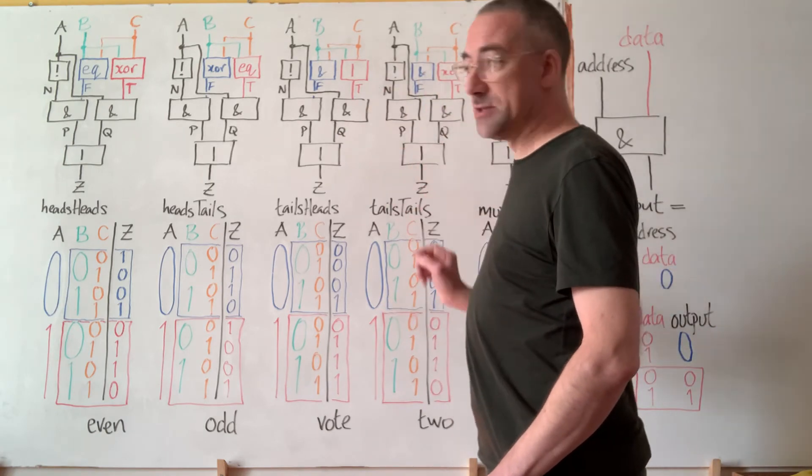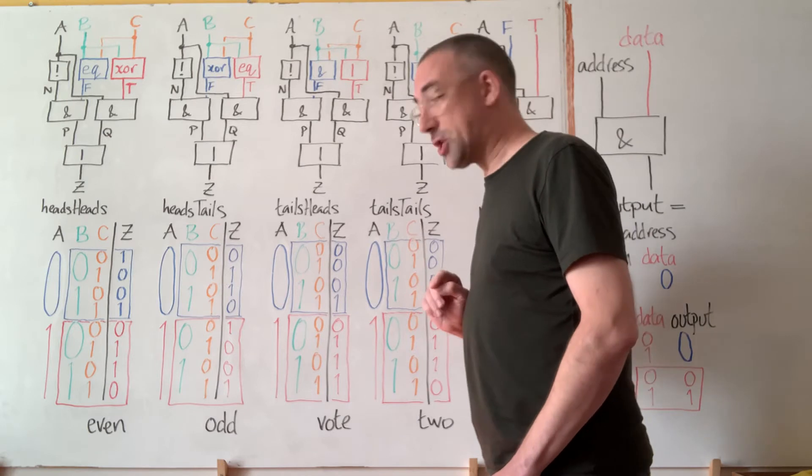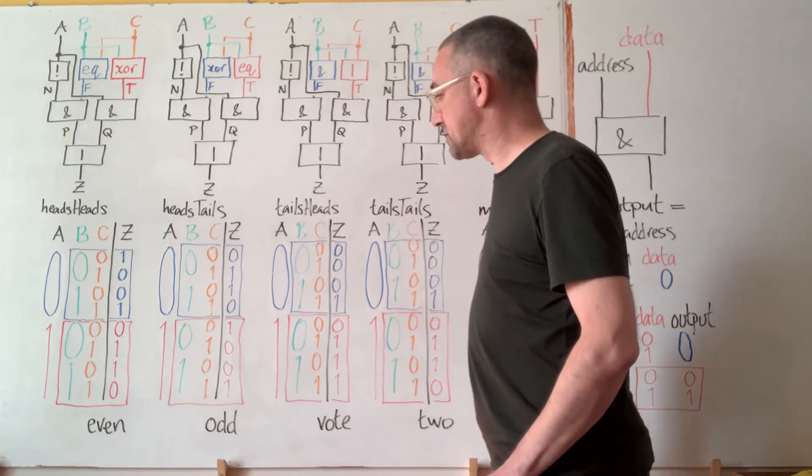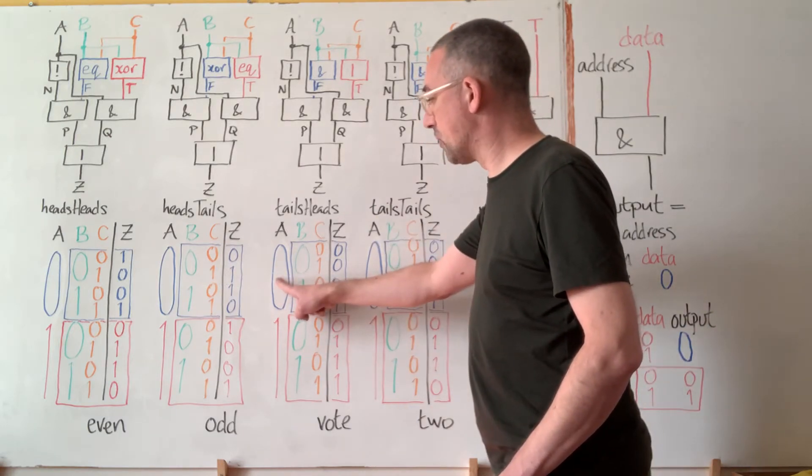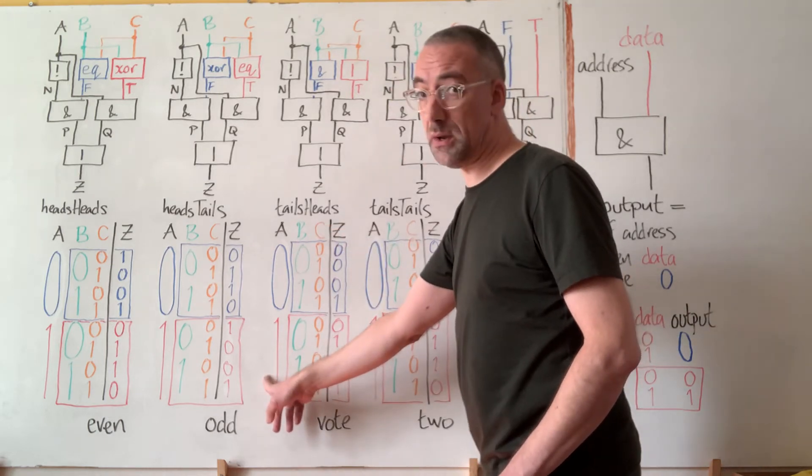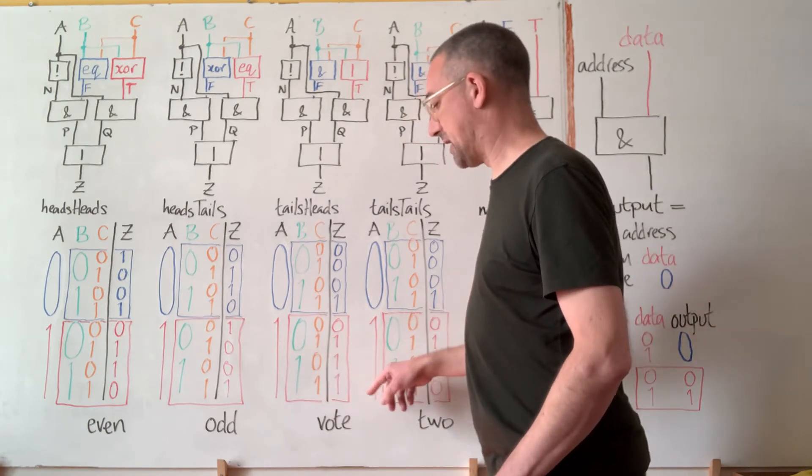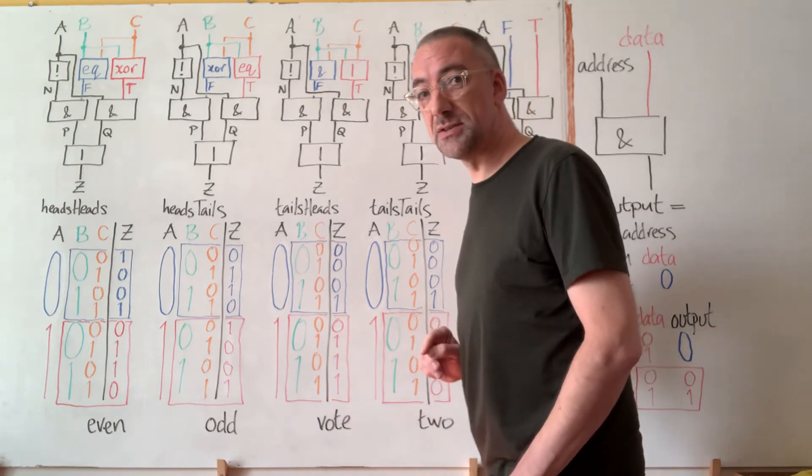Meanwhile this thing choosing between AND and OR is giving us the majority vote of the three inputs. If A says no, both B and C must say yes. If A says one, if A says yes, it's enough for either B or C to say yes. And if they all say yes, so much the better.